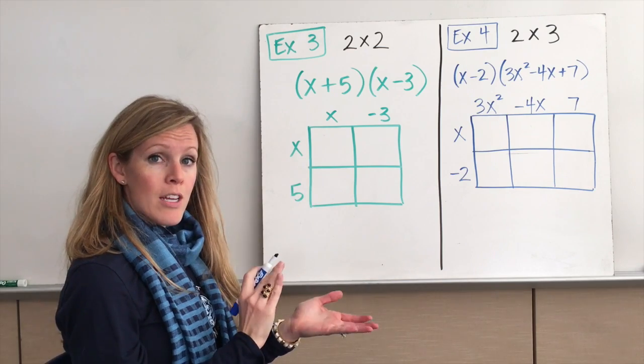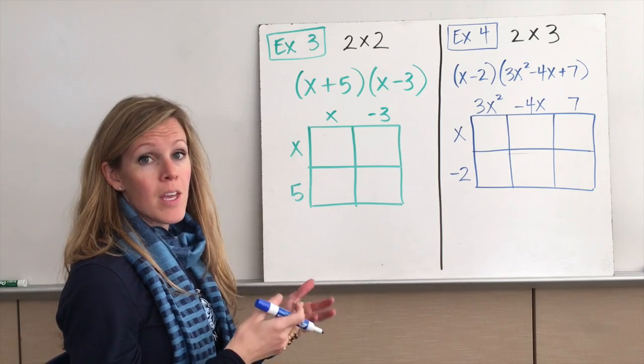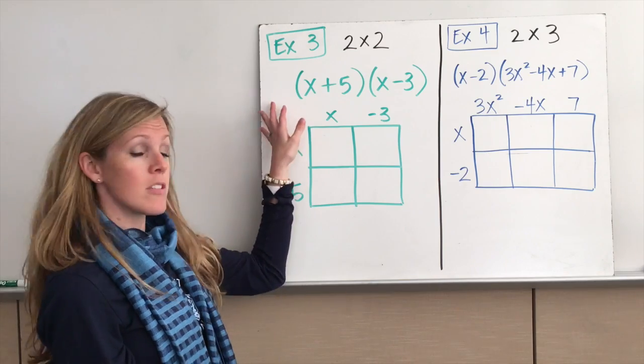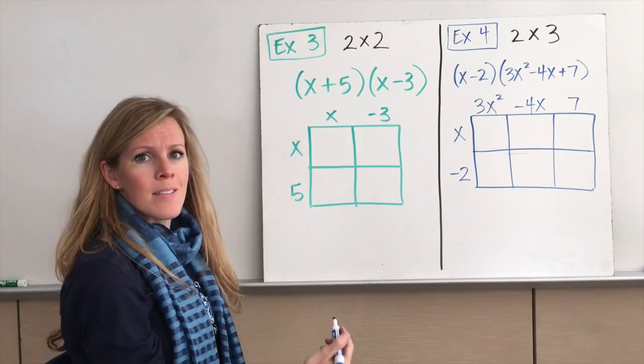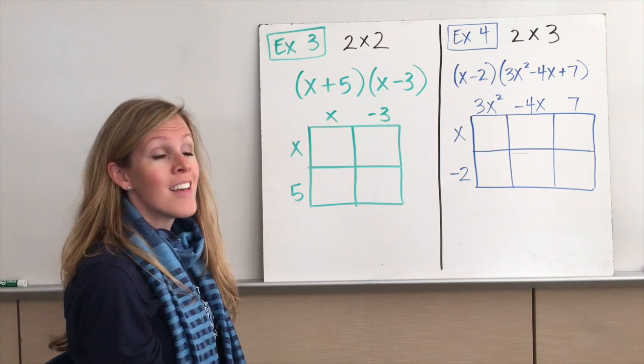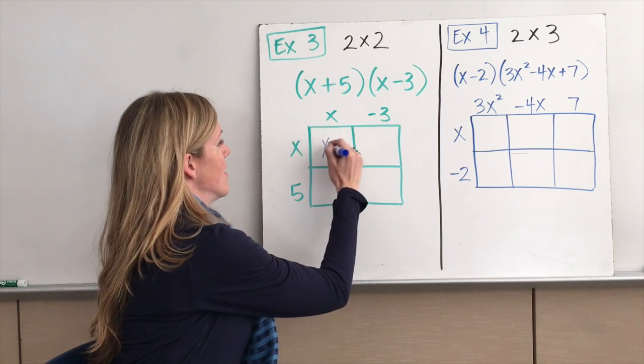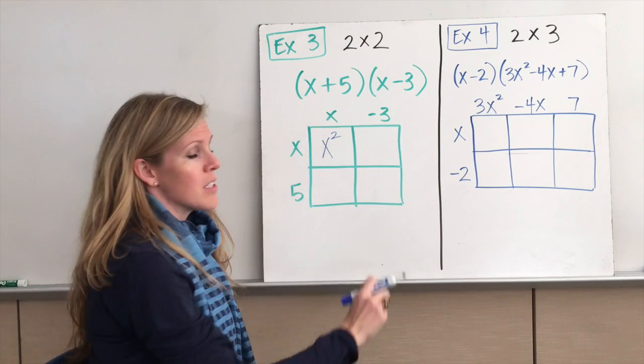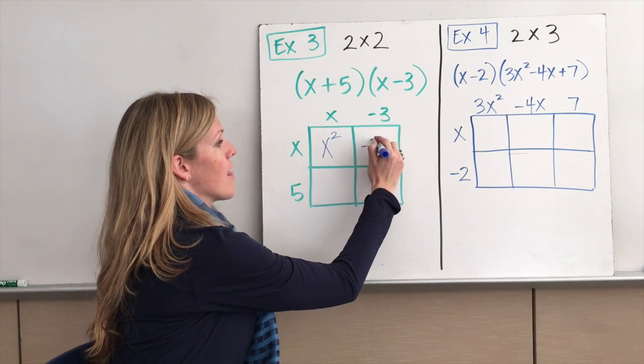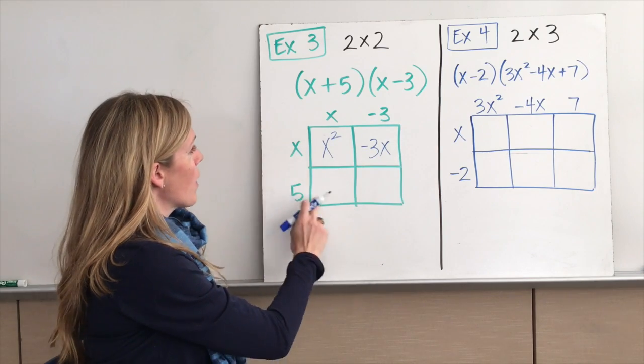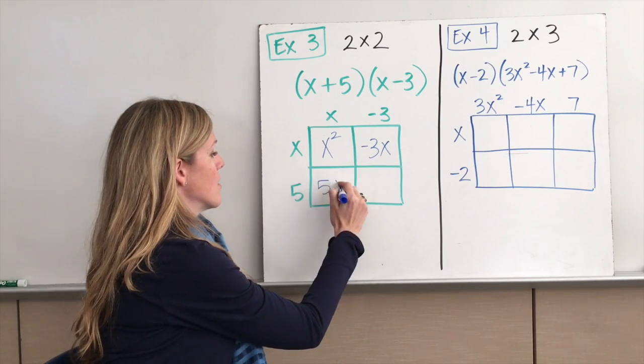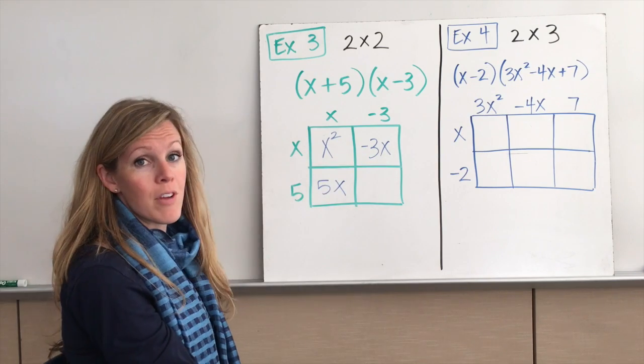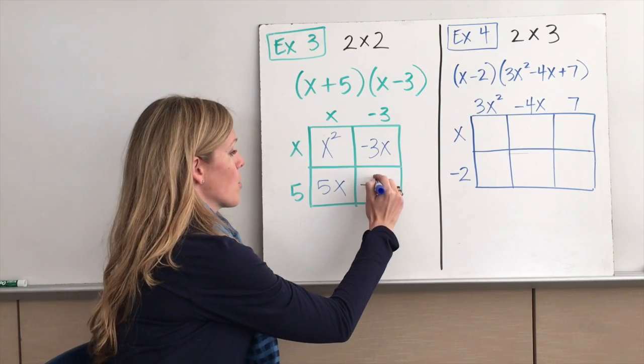You need to start viewing subtraction and negative as basically the same thing. We've talked about this a lot in class, but it's going to be really important here. So what is x times x, Ms. Pariseau? x². Correct. Ms. Pariseau, what is x times -3? -3x. That is correct. What about 5 times x? 5x. Correct. And 5 times -3? -15. Correct.